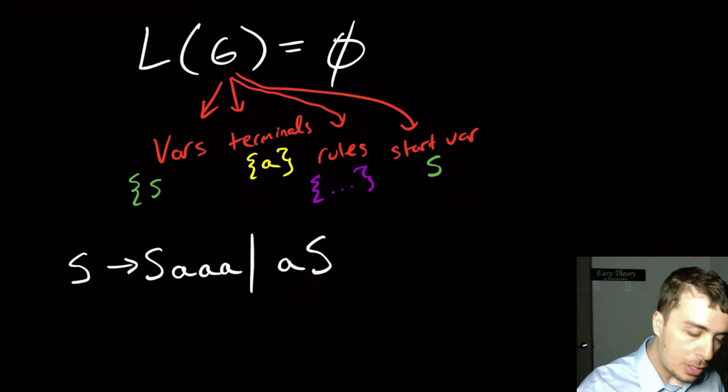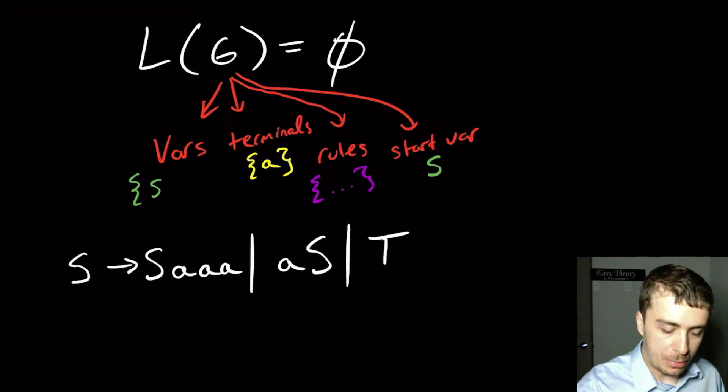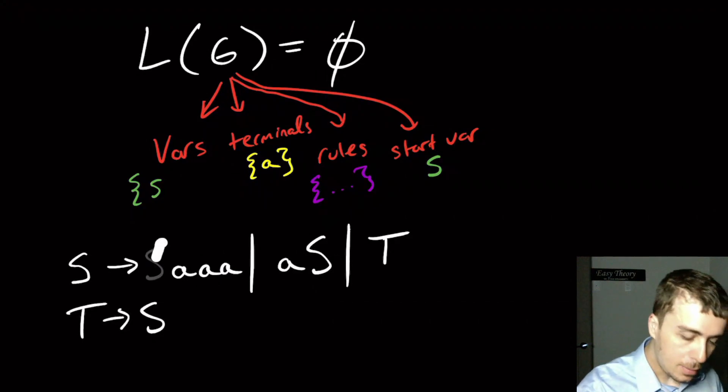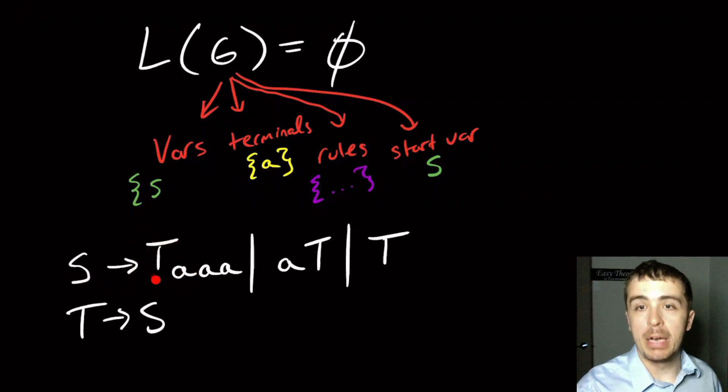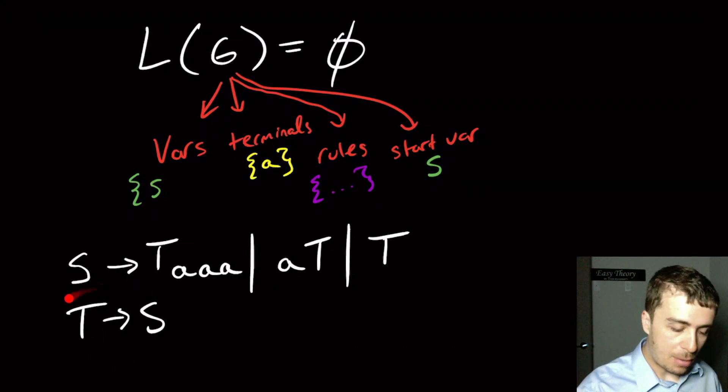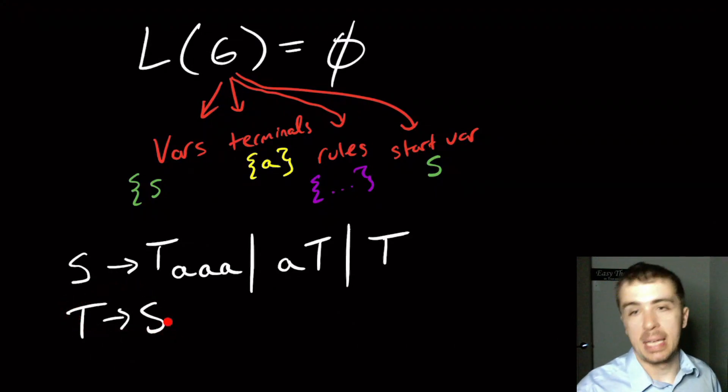I could even have it go to some variable T, where T goes back to S or something. So maybe we forbid allowing a variable to have itself appear on the right-hand side. Well, then what this does is, no matter what you do, there's always going to be a T present. And then once I have a T, I always have to convert it back to an S. And so we're back at the same scenario that we started with.